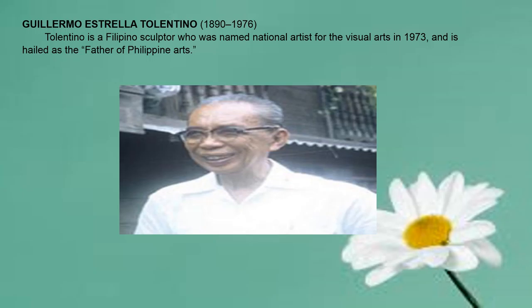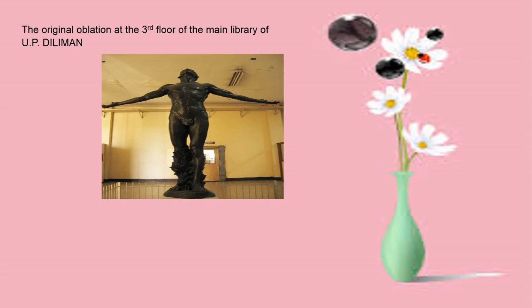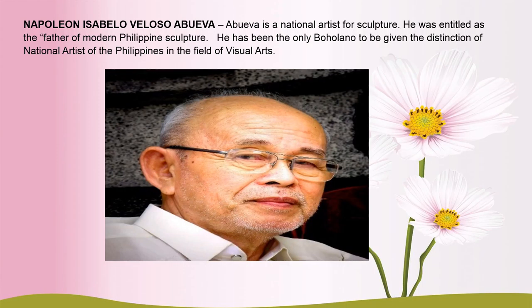Next is Guillermo Estrella Tolentino. Tolentino is a Filipino sculptor who was named national artist for the visual arts in 1973, and is hailed as the father of Philippine arts. The original Oblation sculpture on the third floor of the main library of UP Diliman is his work. Next is Napoleon Isabelo Villanueva Abueva. Abueba is a national artist for sculpture, entitled as the father of modern Philippine sculpture, and has been the only Boholano given the distinction of national artist of the Philippines in the field of visual arts.